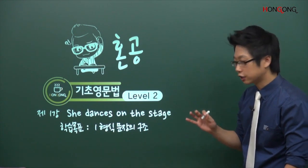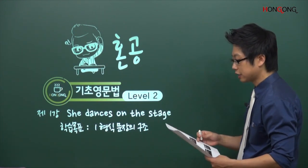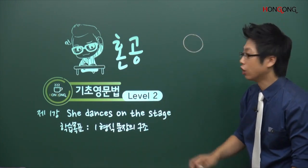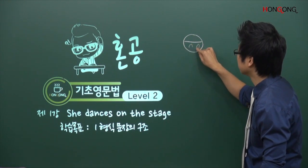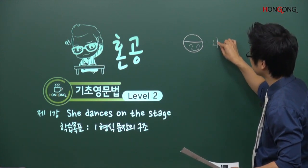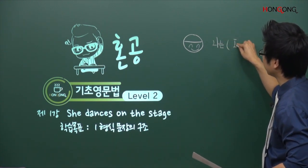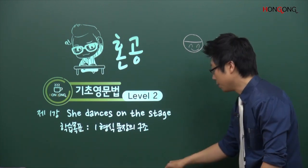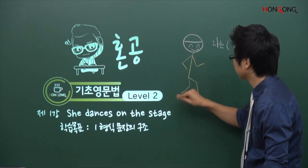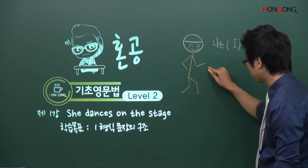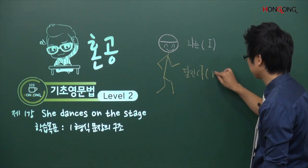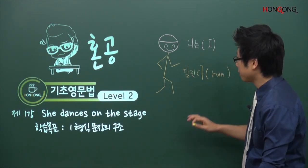기본적으로 영어의 어순에 대해 말씀드리면, 레버1에서 알려드렸지만 영어는 그림을 그린다고 생각하면 됩니다. 나는, 즉 사람이 제일 먼저 나오죠. 영어로는 I가 됩니다. 그 다음에 몸을 그리는 거죠. 달린다고 할까요? 영어로 하면 run이죠.